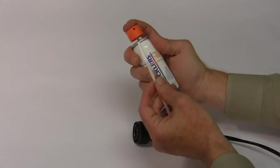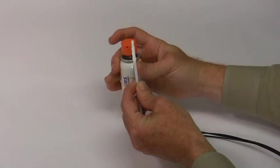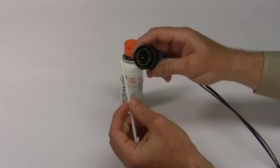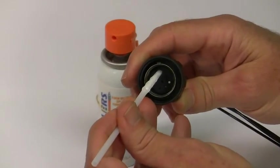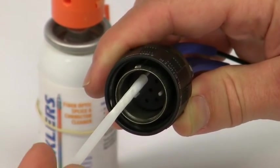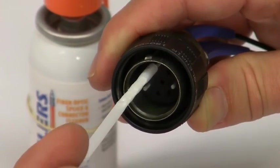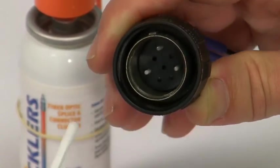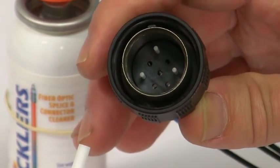If you need to clean exposed ferrules and termini that are recessed in heavy-duty connector bodies commonly used in military and aerospace applications, wipes won't reach, which means the connectors must be disassembled to be cleaned. As you can see, the yellow Stickler's Clean Sticks P25 eliminates the need for disassembly and makes easy work of this otherwise difficult task.